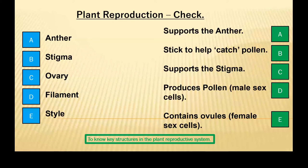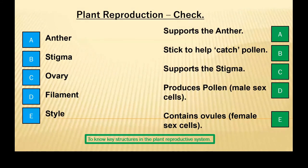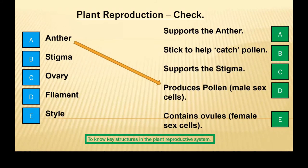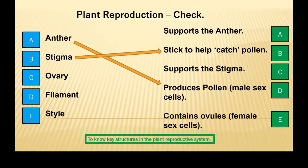Okay, so we've got blue A to green D. Let's go through some answers. Blue A will match up to green D — it produces the pollen, which is the male sex cell. Blue B, the stigma — that is the sticky surface which will help catch the pollen. So, blue B to green B.